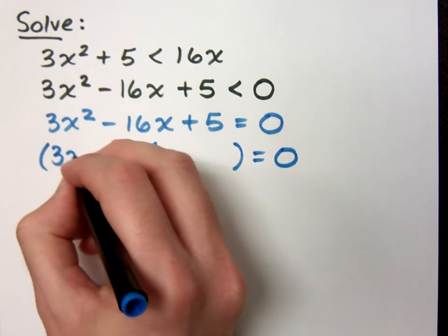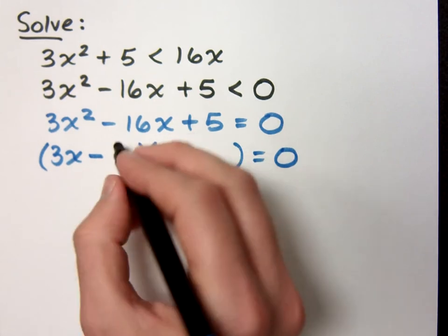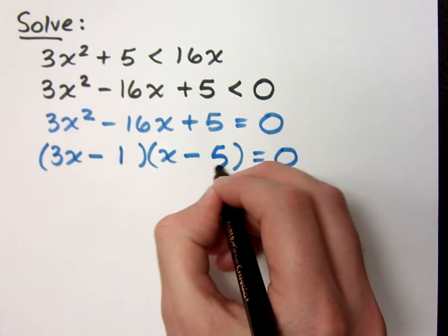When I factor, the 3x² breaks down as 3x and x. Both of these guys are negative. And I need to use a -1 and a -5.